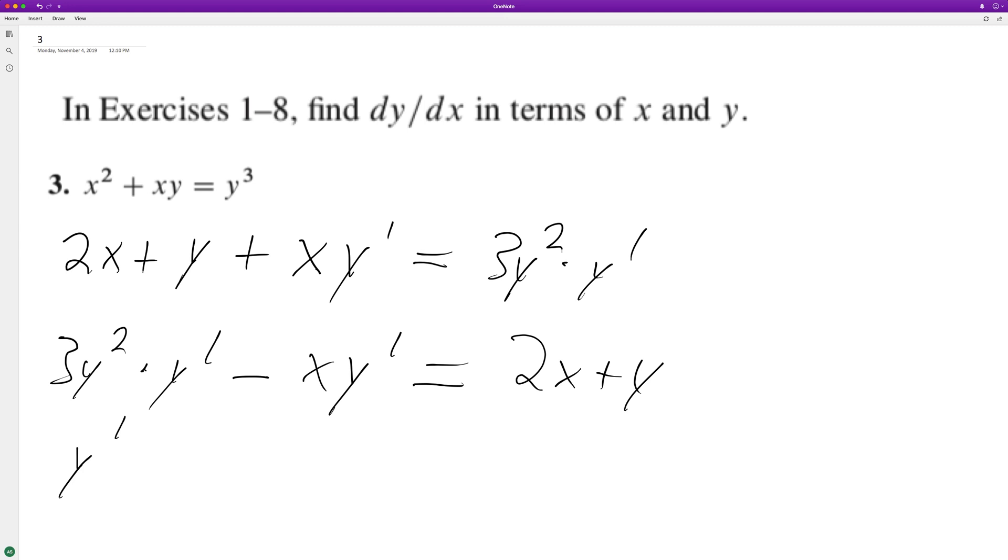Factor out the y prime, we get 3y squared minus x equals 2x plus y. Divide by 3y squared minus x.